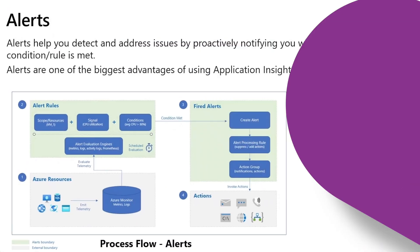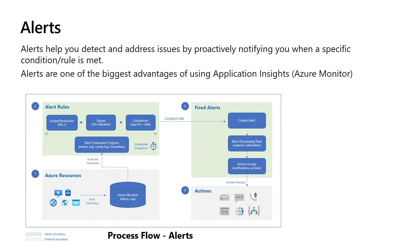Alerts are one of the biggest advantages of using Application Insights. Alerts can detect and address issues by sending proactive notifications and performing other actions such as calling an Azure function, webhook, or a Logic App. This diagram represents the process flow for alerts. The first step is Azure resources or web applications pushing telemetry to logs or metrics — in our case, Power Automate. Next, alert evaluation engines evaluate your alert rules on a scheduled basis. If the condition is met, an alert will be fired, and based on your alert processing rules or action groups, it will perform some action such as sending a notification or performing an automated task.